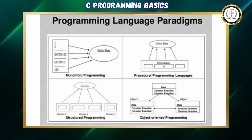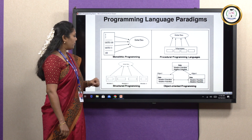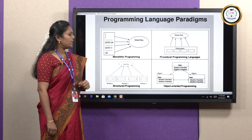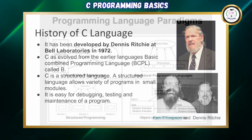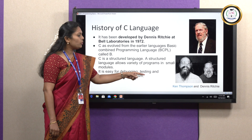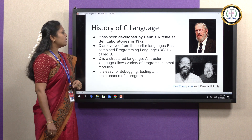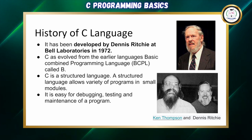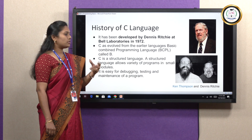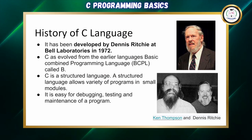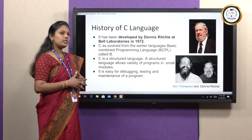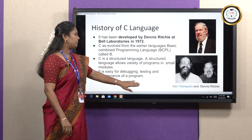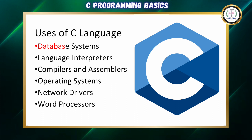All programming languages can be categorized into paradigms: monolithic programming, procedural programming, structured programming, and object-oriented programming. C programming comes under structured programming language. Looking at the history of C language, it was developed by Dennis Ritchie along with Ken Thompson in 1972. It evolved from a language called BCPL — Basic Combined Programming Language — earlier called B language. C predominantly took its syntax from BCPL and was named C after B. C is used in various applications including database systems, language interpreters, compilers, assemblers, operating systems, network drivers, and word processors.